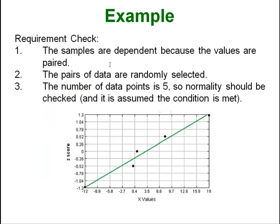A requirement check? Well, we need to check that the samples are dependent. Well, of course they are because they are matched up. Randomly selected? Yeah, they told us they were randomly selected. The number of data points is 5, so normality should be checked. And from our normal quantile plot here we can see that there is no obvious pattern. So we can assume that the condition is met.